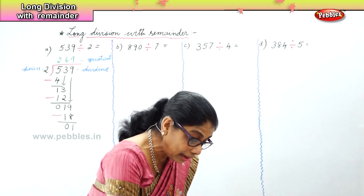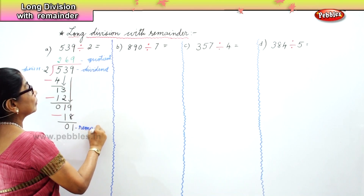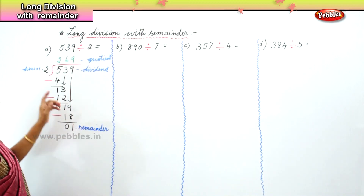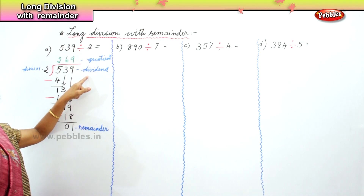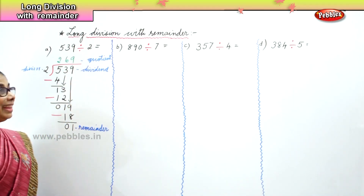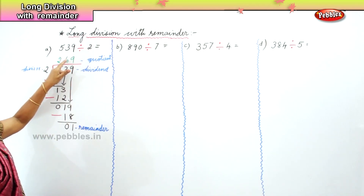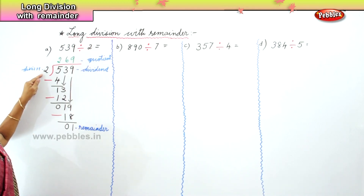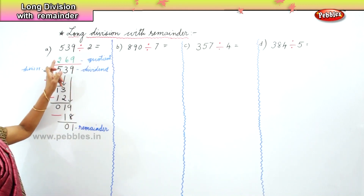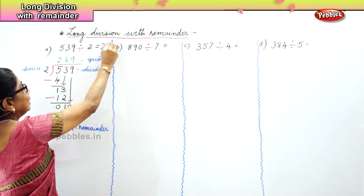We have 1 left over — that is the remainder. To check: multiply the quotient 269 by the divisor 2, then add the remainder 1, and you get back the dividend 539. So the answer is 269 remainder 1.